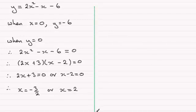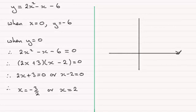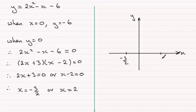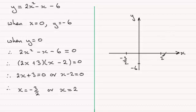So we've got the coordinates of where it crosses the y-axis and the x-axis. Sketching the axes — it crosses the x-axis when y is 0 at minus 1 and a half, that's minus 3 over 2, and at 2. It crosses the y-axis at minus 6. Remember, you don't have to have the y-axis scale the same as the x-axis scale. It's a positive x-squared graph so it's going to be a u-shaped parabola, going through minus 3 over 2, minus 6, and 2.